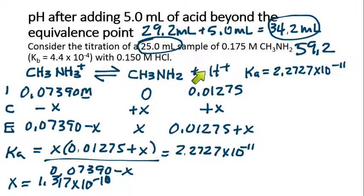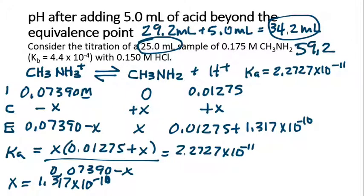What we need is the hydrogen ion concentration, which is 0.01275 plus x, plus 1.317 times 10 to the minus 10. We can see in this case we could have used the x-is-small approximation and would have been just fine. So that's going to end up being 0.01275. Negative base-10 log of 0.01275 gives us a pH of 1.89.